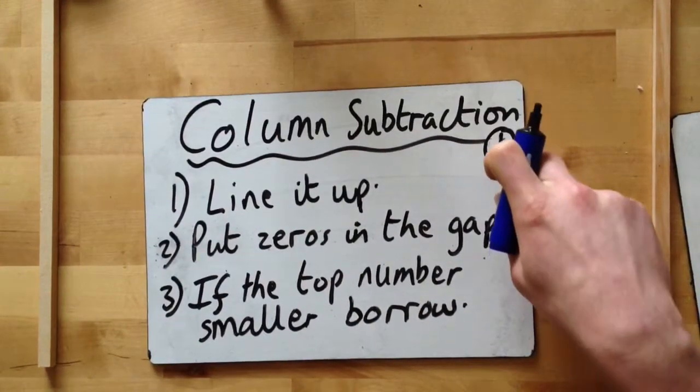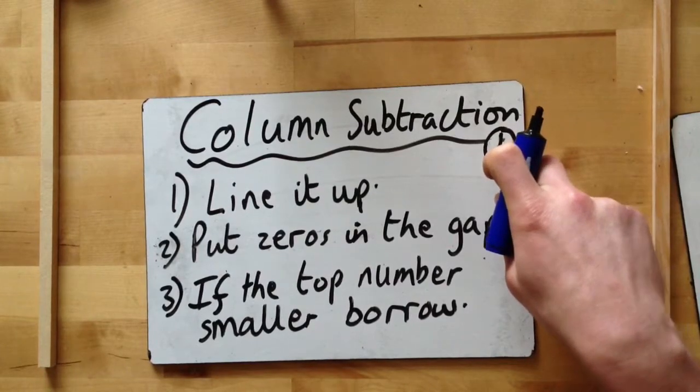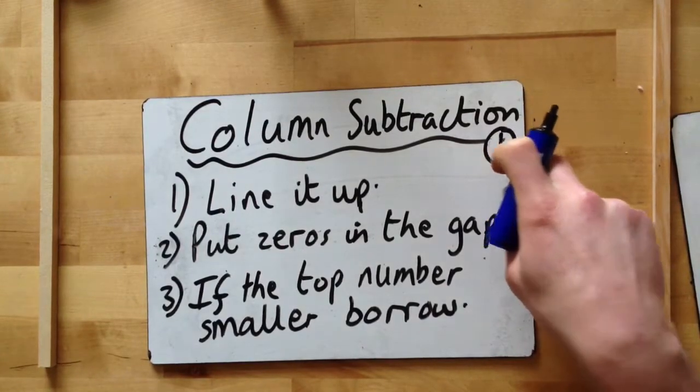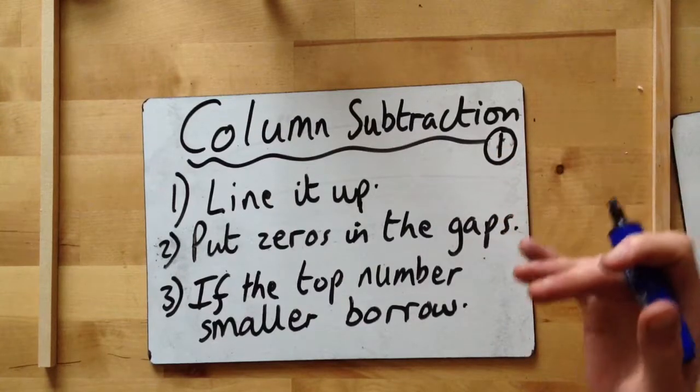This is the first part. I'm going to do two parts because it's a little trickier whenever you've got lots of zeros in your subtractions, but we're going to look at it this way. The same rules apply.